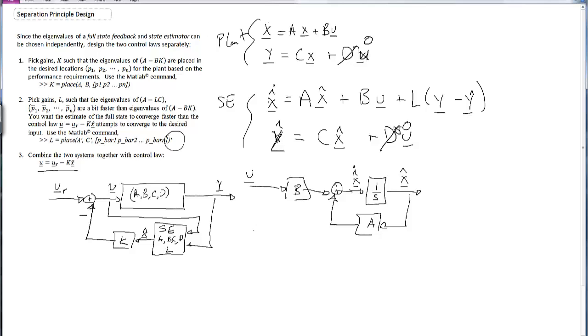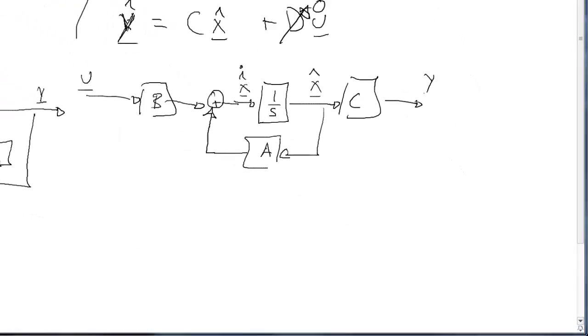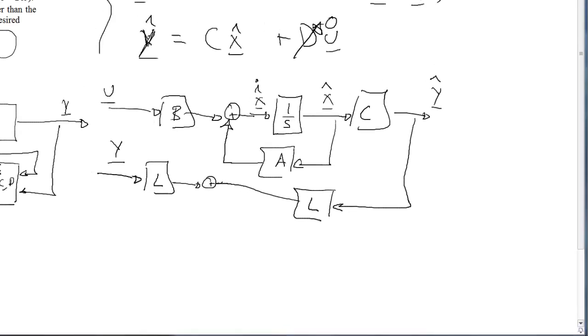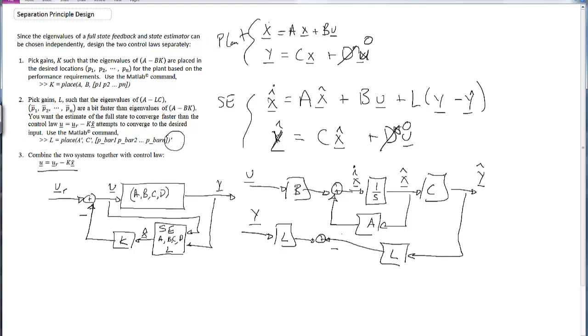And then notice this equation requires L times Y minus Y hat, so this is going to get a bit crowded, but I've got L times Y minus Y hat. Y hat comes by taking C, and then I get Y hat there. So I need to take that gain, multiply it by L, and then I also need to take the input Y, multiply that by L, and then I need to take those two and add them together. I actually need to subtract this one there.